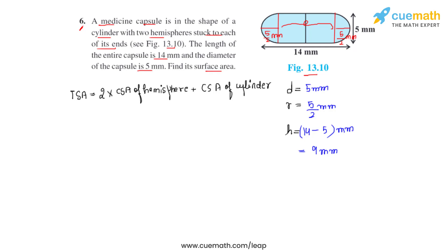Now let's write the formulas for each of these: 2 times 2 pi r square. 2 pi r square is the curved surface area of hemisphere plus curved surface area of cylinder which will be 2 pi r h. We can take 2 pi r common, that will leave us with 2r plus h inside the brackets.